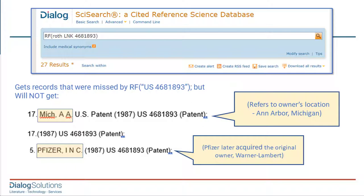I'll pause here to explain the connector. When I combine the word Roth with the number, I don't use the AND operator — I'm using the LINK connector, abbreviated LNK. That's because if I use AND, I could get hits where one reference includes the name Roth while a different reference in the record contains the number 4681893, but not for our patent. Using the LINK connector, LNK, means these things have to appear together in the same reference or footnote. You should use LNK when combining different elements of a reference in an RF search in SciSearch.